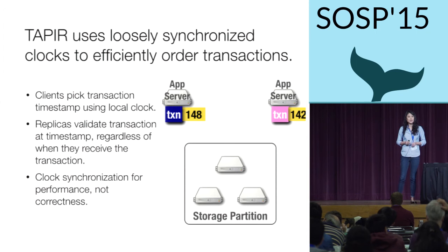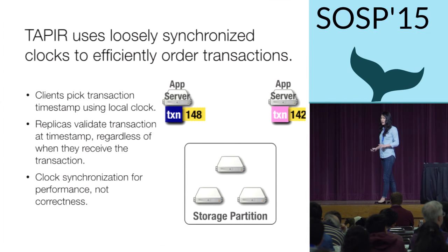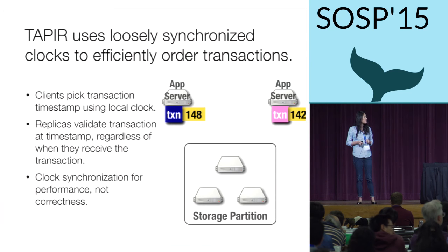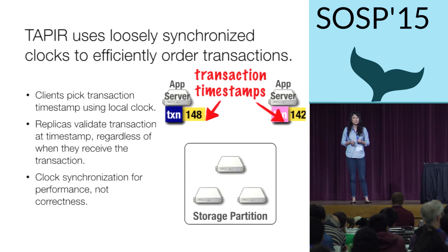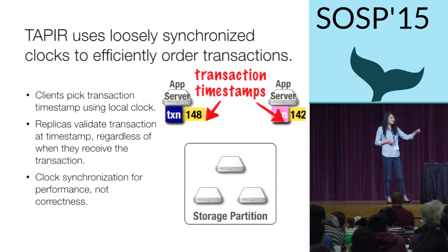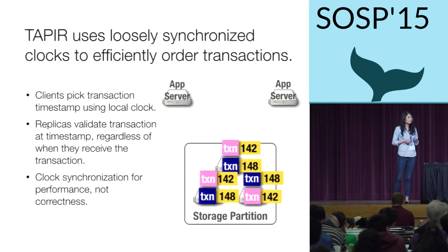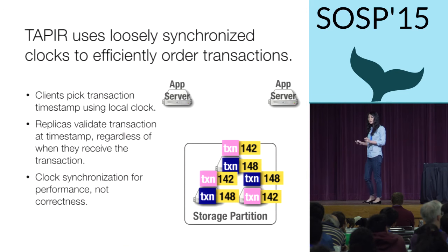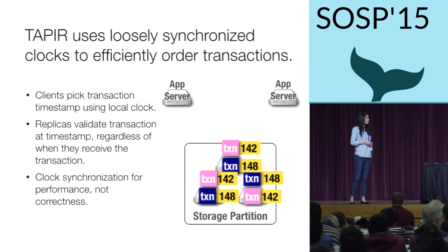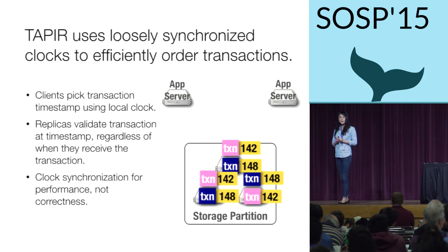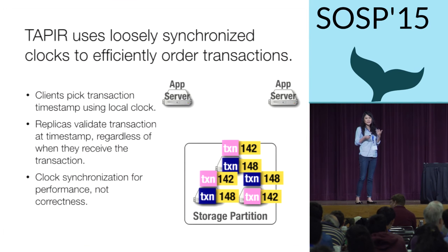The next challenge is that IR has no ordering, so TAPIR needs an efficient way to order transactions. What we chose to do was use loosely synchronized clocks at the clients. The clients use these clocks to pick timestamps for their transactions and attach the timestamp before sending to the replicas. When replicas receive transactions, they commit them in timestamp order regardless of when they arrive. This makes it much more likely that replicas will return the same result, even if they receive transactions out of order.